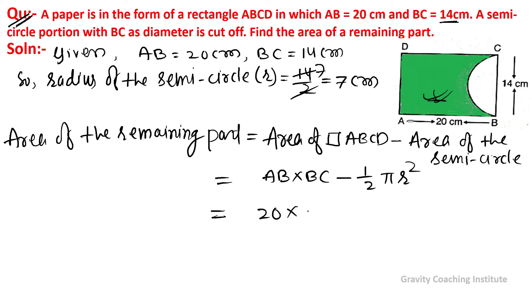20 into 14 minus one half into pi, in place of pi we use 22 upon 7, and radius is 7 centimeter so 7 into 7. Here 7 and 7 cancel, so equal to